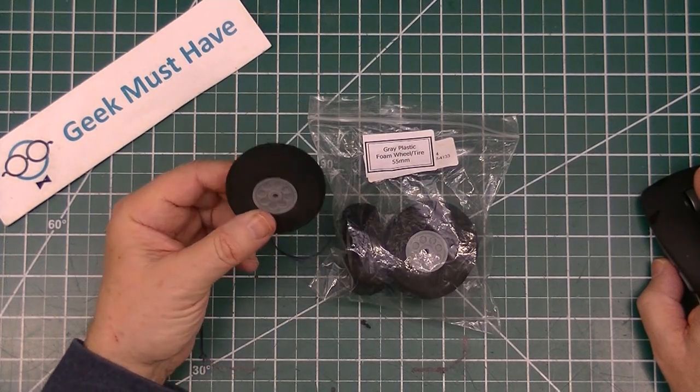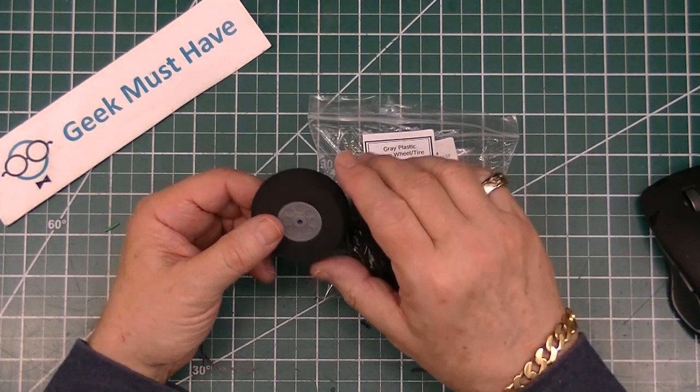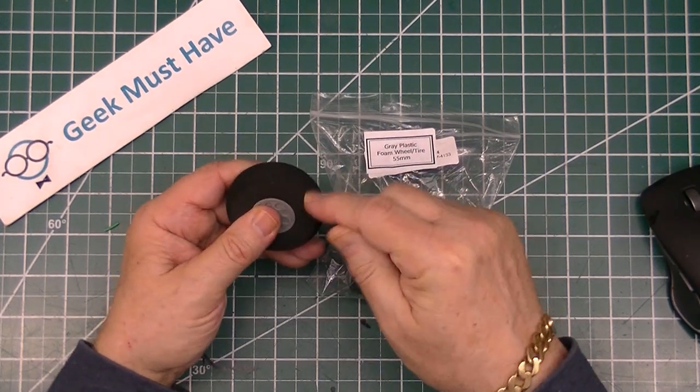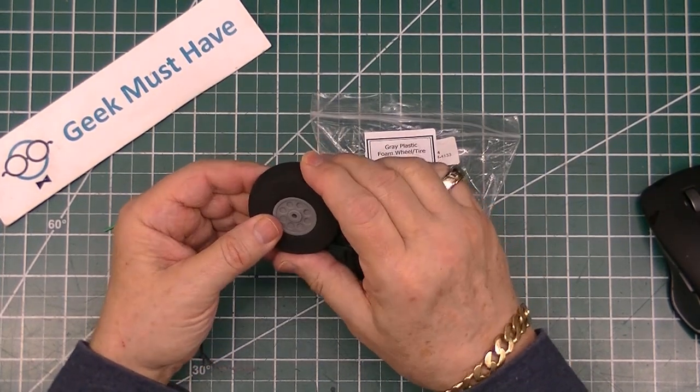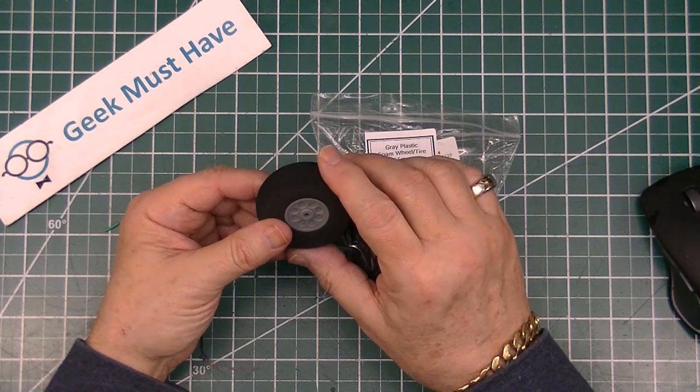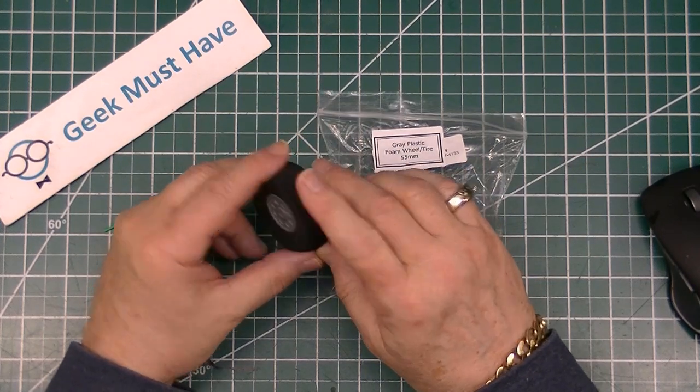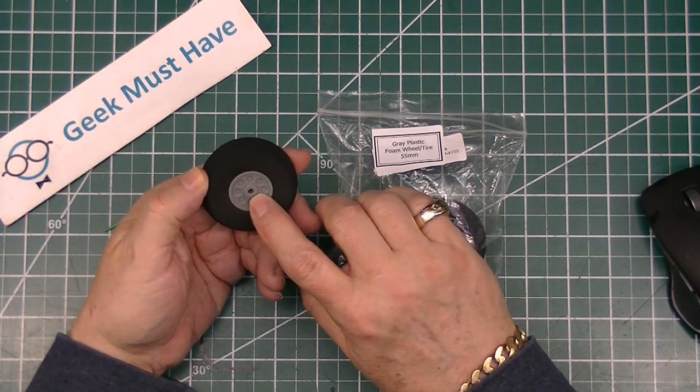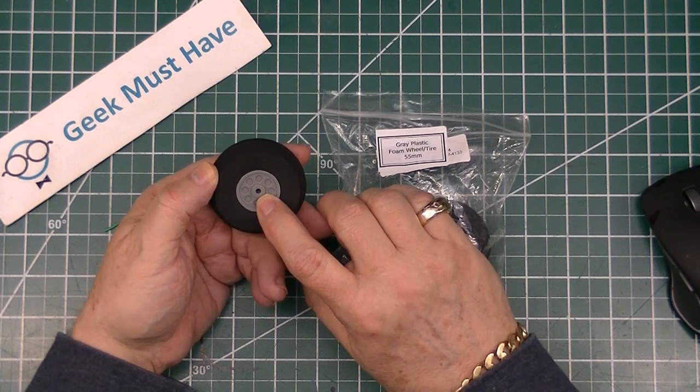The next items are these gray plastic hub wheels with solid foam tires on them. These are 55 millimeters in diameter. I think the center hole is probably about 3 millimeters.